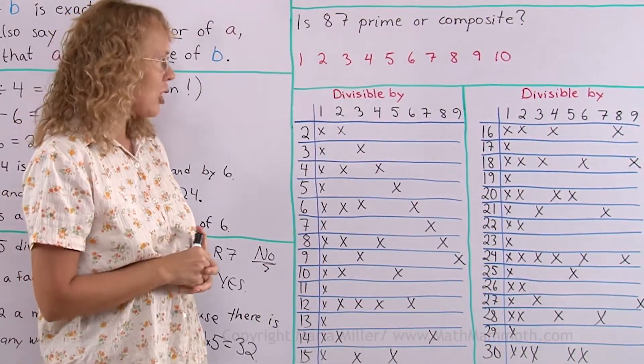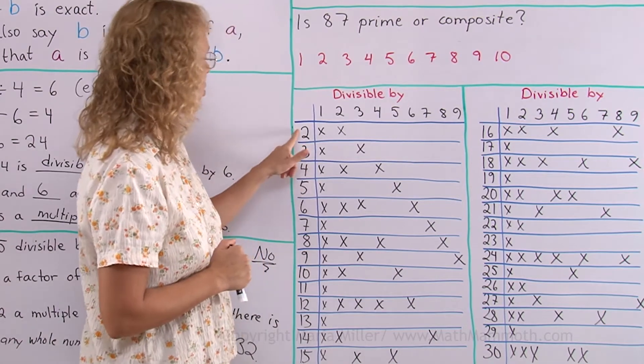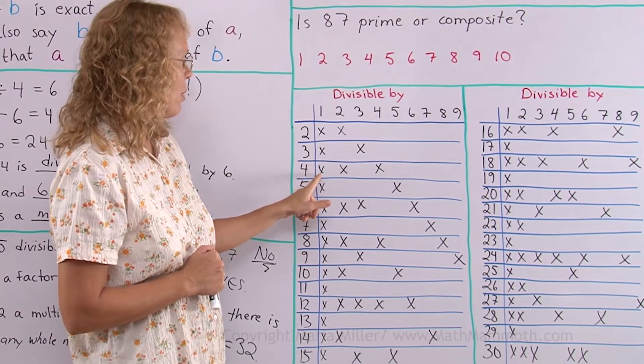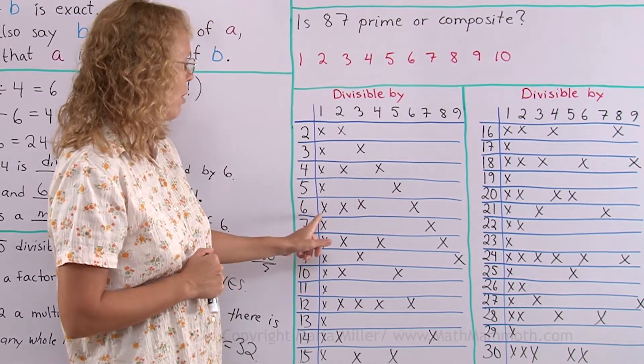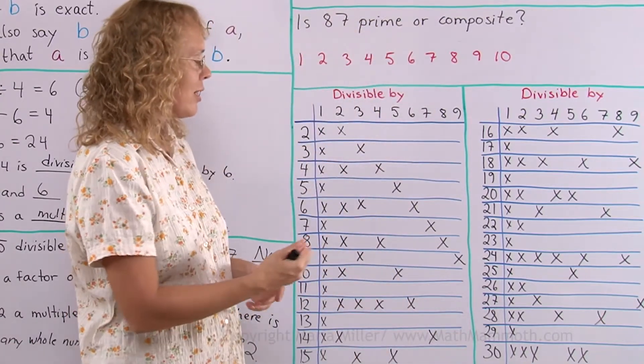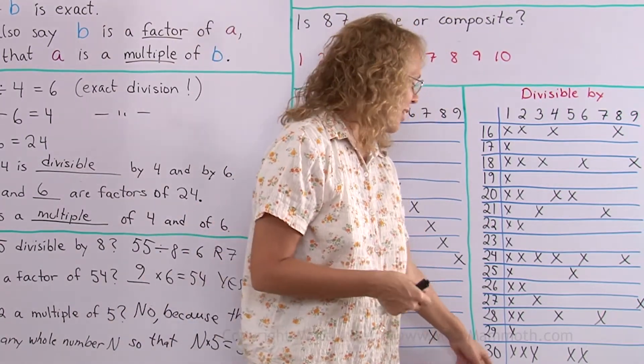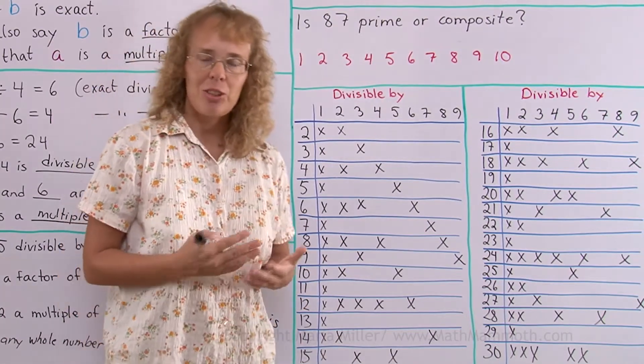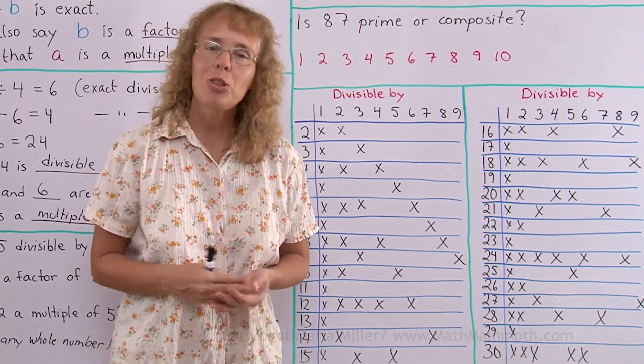And now, our chart is complete. And there are some numbers here that are kind of special. Let's look here. 2 is divisible by 1 and 2. 3 is divisible by 1 and 3. 4 is divisible by 1, 2 and 4. Then 5 is divisible by 1 and 5. 6 is divisible by 4 different numbers. 30 is divisible by 5 different numbers. Now, I know I didn't go up past 10. 30 is actually divisible by 10 too, and by 15, and by 30. So, there's actually more factors there too. But this is actually enough for us to find some special numbers that are only divisible by 1 and by themselves. And those numbers are called prime numbers.